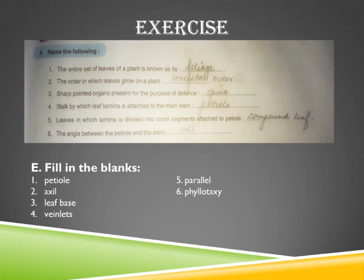Fill in the blanks — I have written only the answers here. The stalk by which the leaf lamina is attached to the main stem is the petiole. The angle between the petiole and the stem is called axil. The end of the petiole joining the stem is known as the leaf base. Veins divide and subdivide to form a network of veinlets. If the venation runs parallel to the midrib, it is called parallel venation. The arrangement of leaves on the nodes of the stem and branches is known as phyllotaxy.